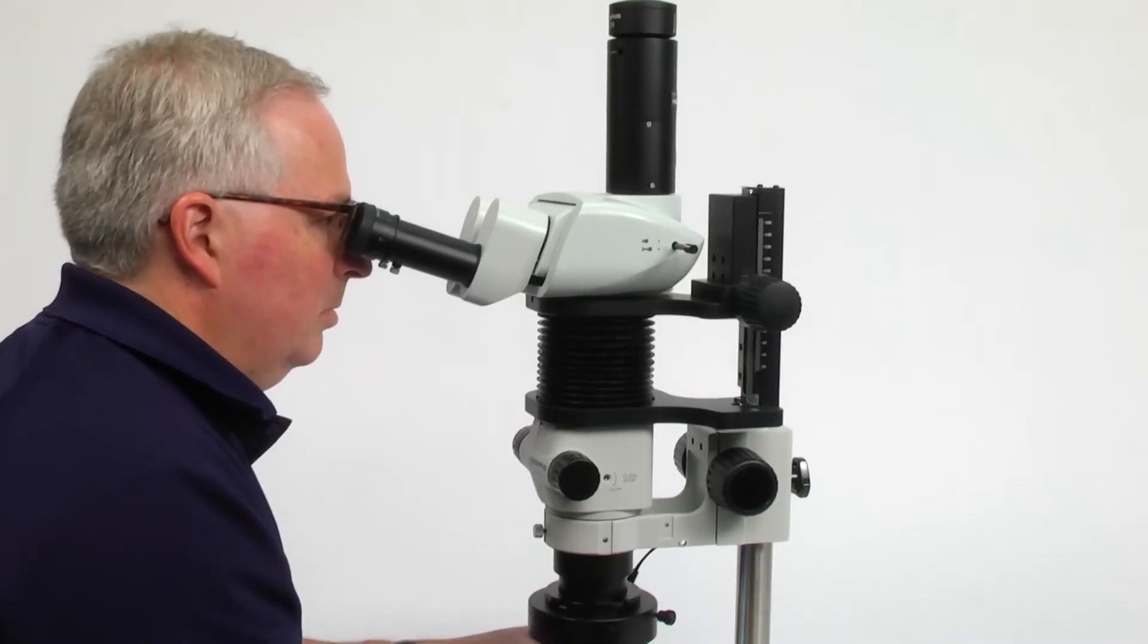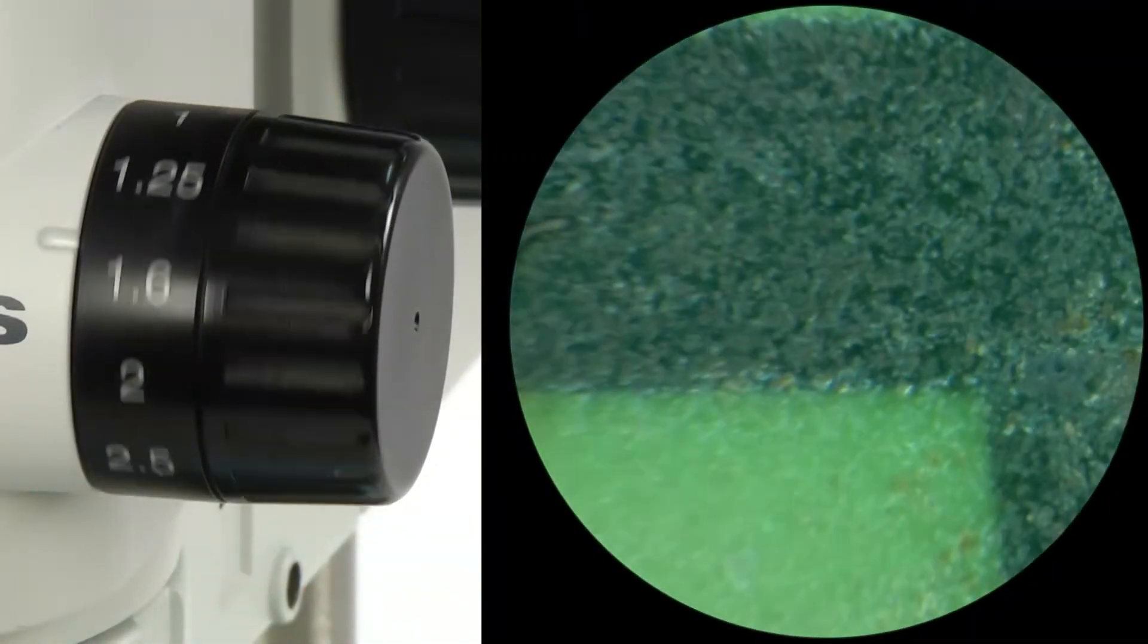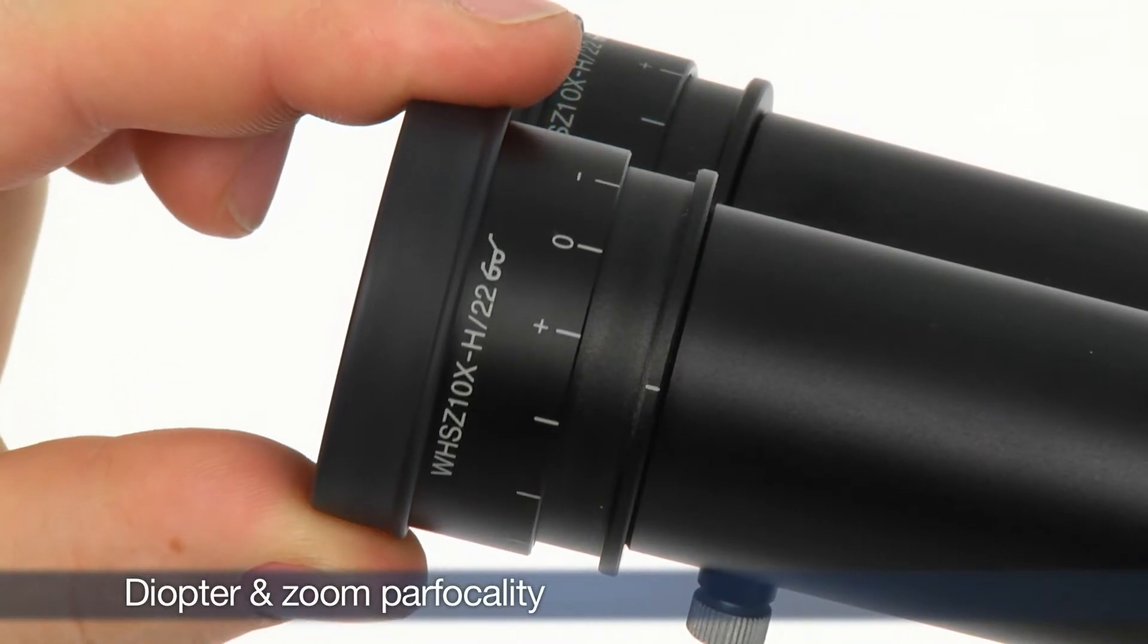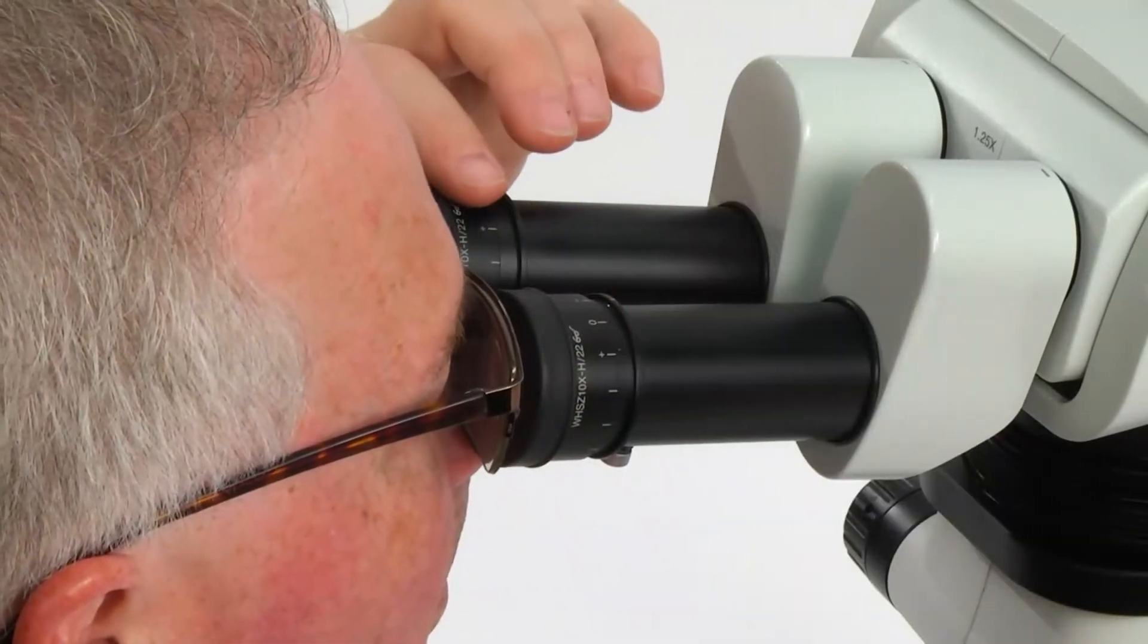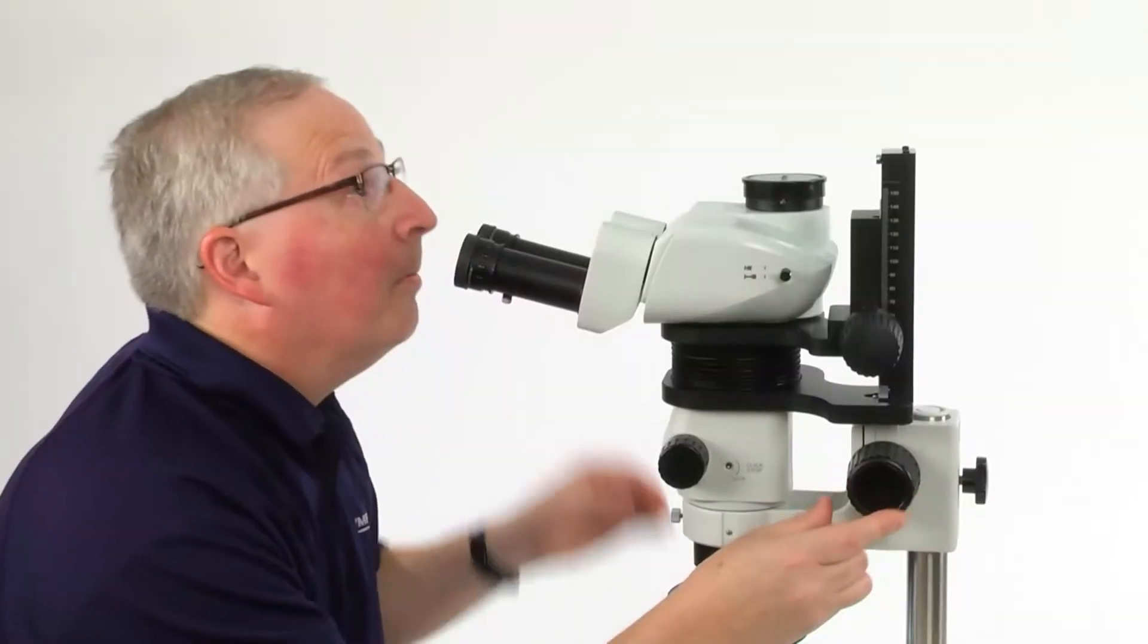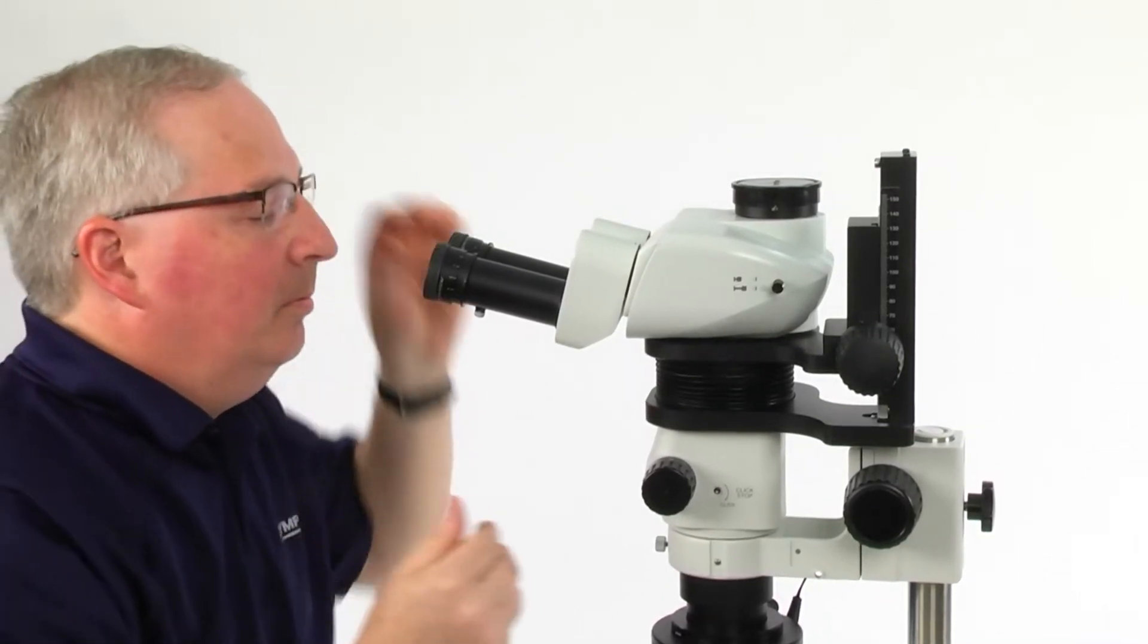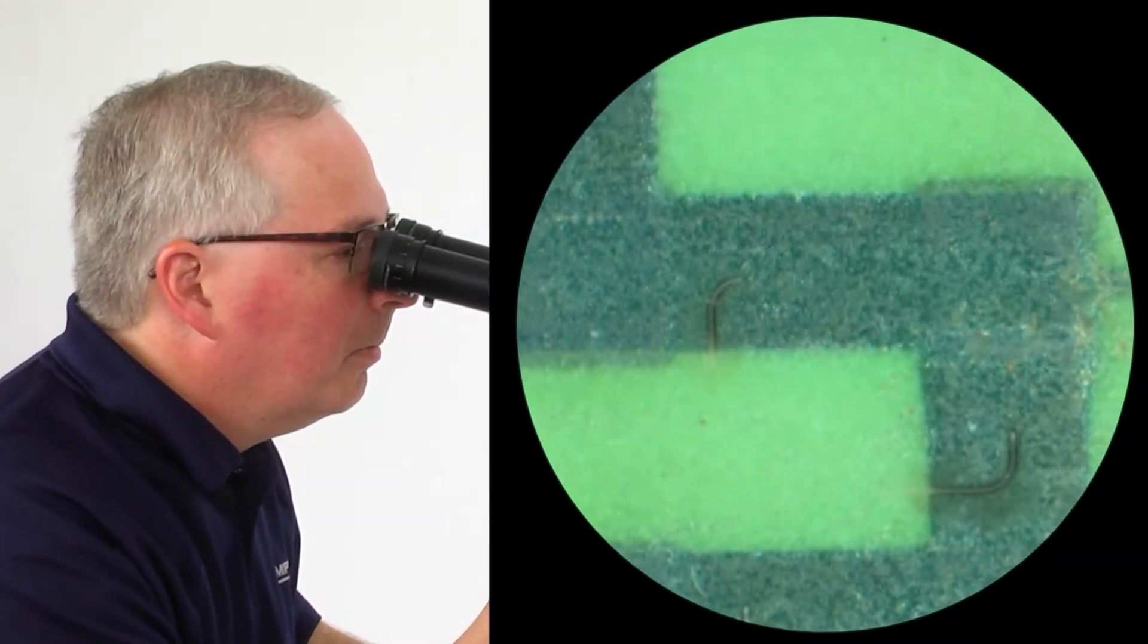Next, the stereo microscope must be properly focused to provide a clear image from low to high magnification. The diopter and zoom parfocality must be properly adjusted to provide consistently clear images through the range of magnifications. The diopter adjustment is used to compensate for differences between one's eyes and is an important step in preventing eye strain that can lead to fatigue as well as eliminating the tedious task of having to refocus the microscope every time the zoom is changed.